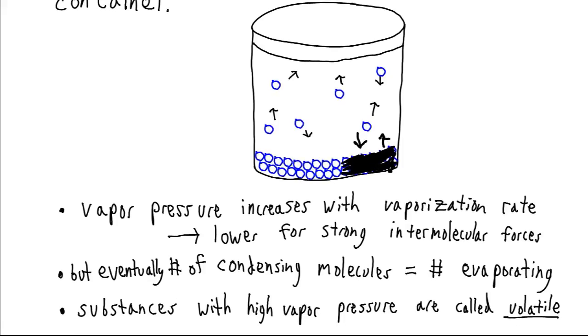Now if we have a substance that has a very high vapor pressure because it has a high vaporization rate, because it has low intermolecular forces, then that's what's called a volatile substance.